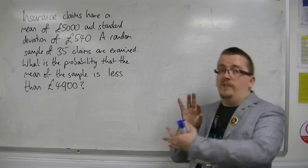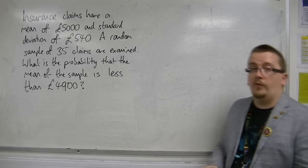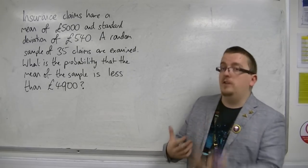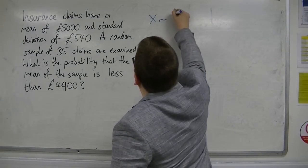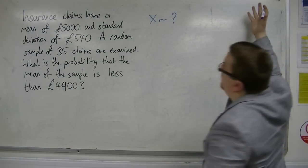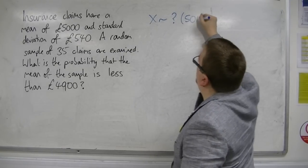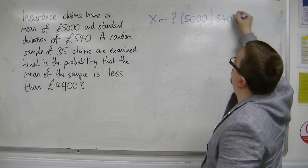So in this first sentence, we have not been told that the insurance claims follow a normal distribution. They may, they may not. So currently we can say that the population, we don't know about the distribution, but it has a mean of 5,000 and a variance of 540 squared.